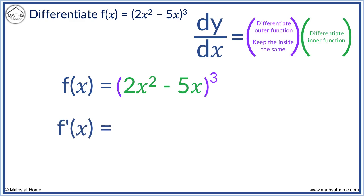f'(x) is found by differentiating the outer function. 3 comes down and we subtract 1 from 3 to get 2. We keep 2x² - 5x as 2x² - 5x. We must remember to multiply this by the derivative of the inner function.